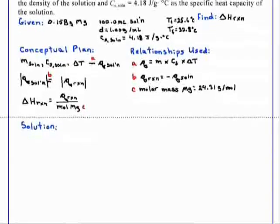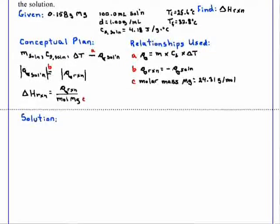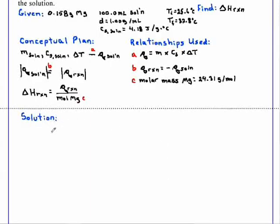The first thing we will do is determine the mass of the solution. We know that we have 100.0 milliliters of solution and the density is 1 gram per milliliter.